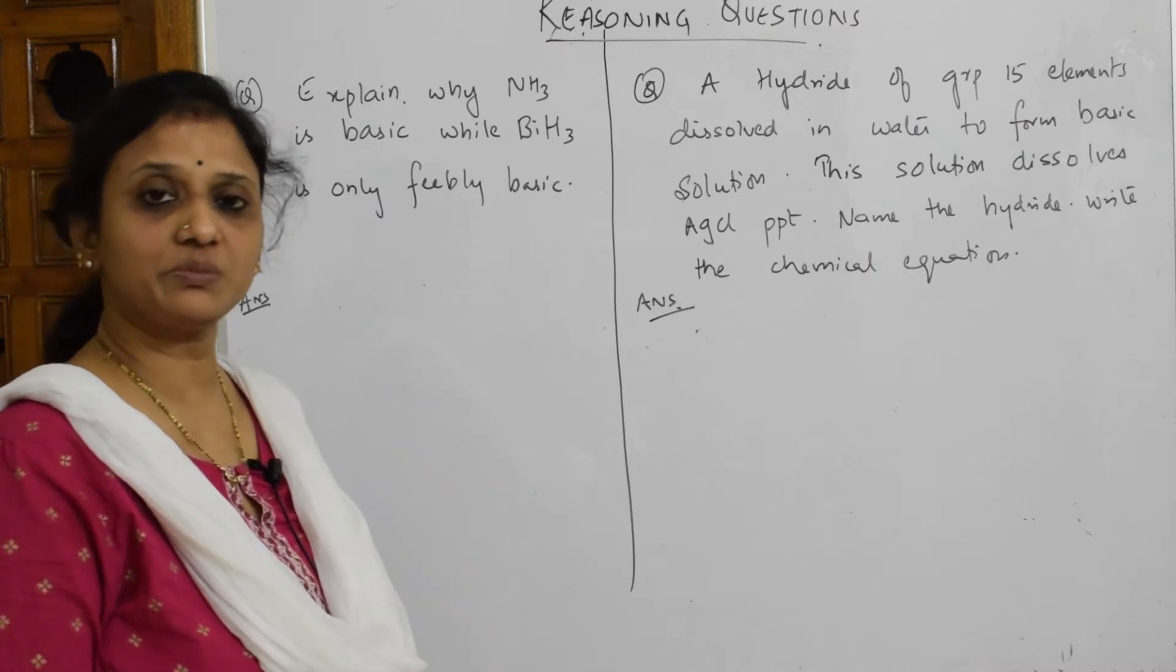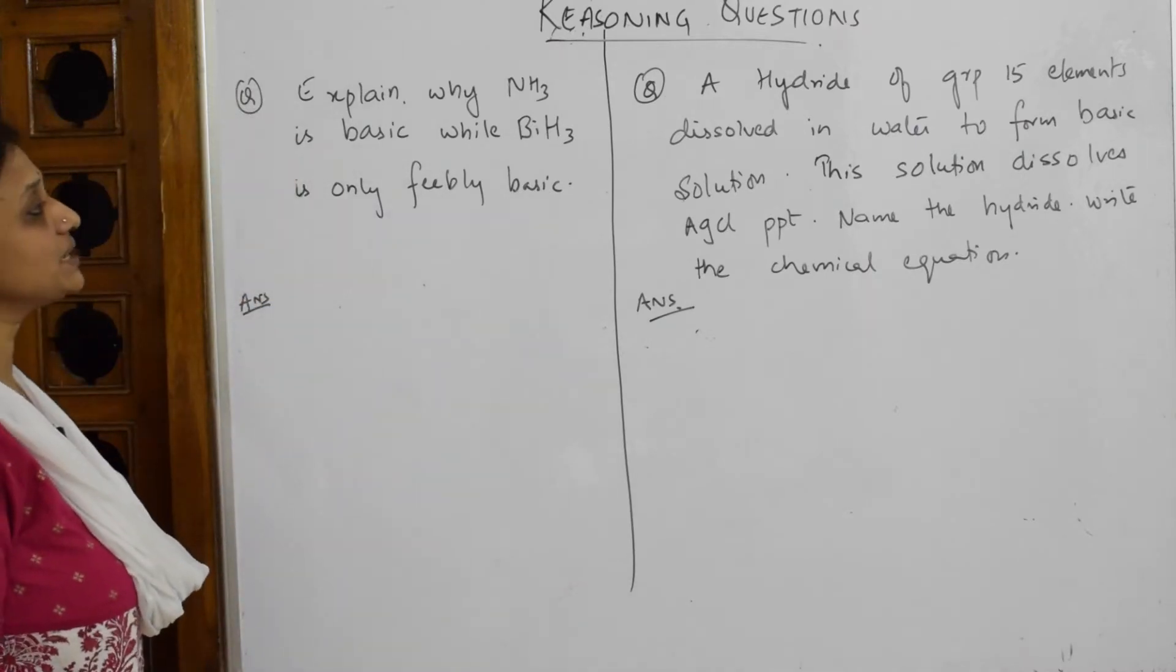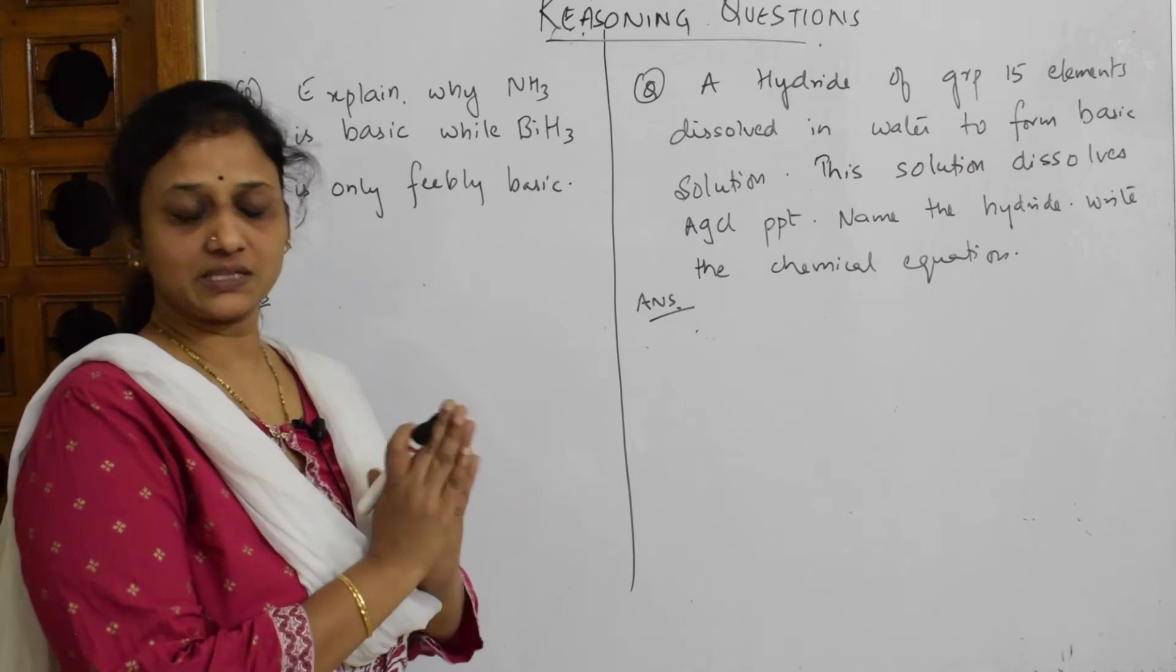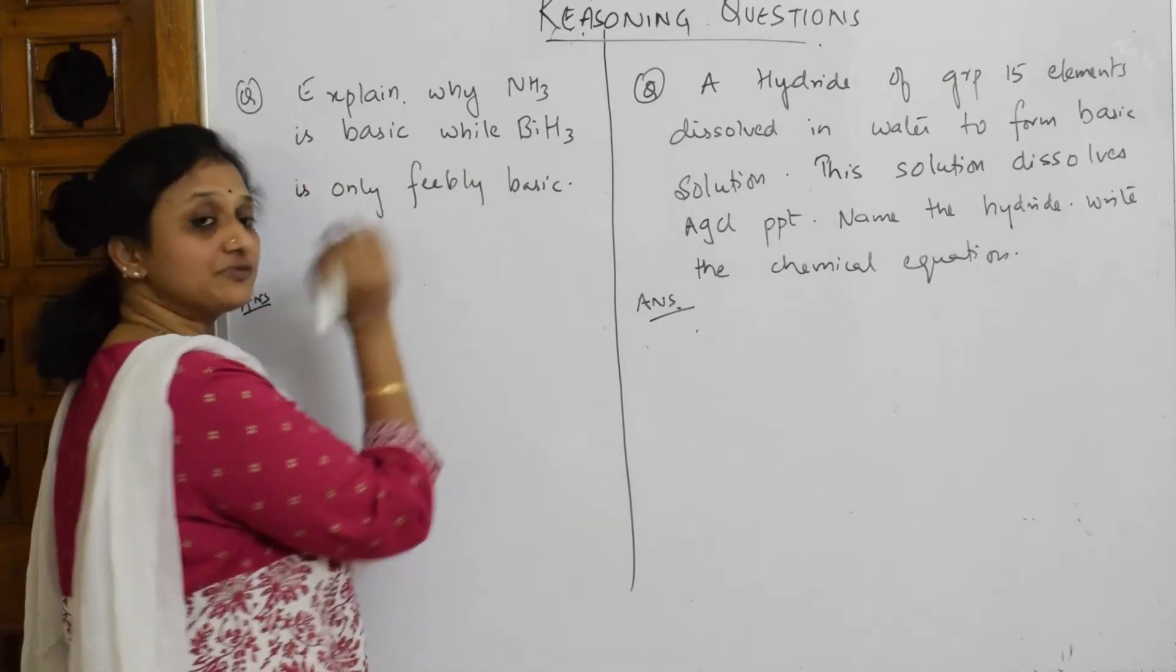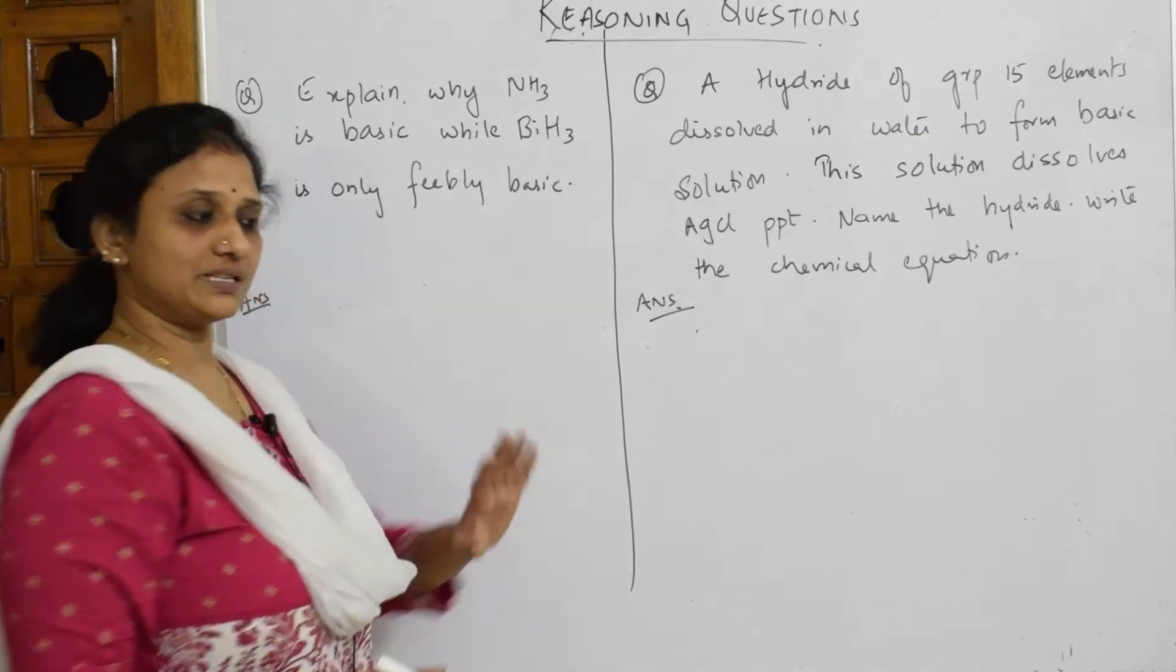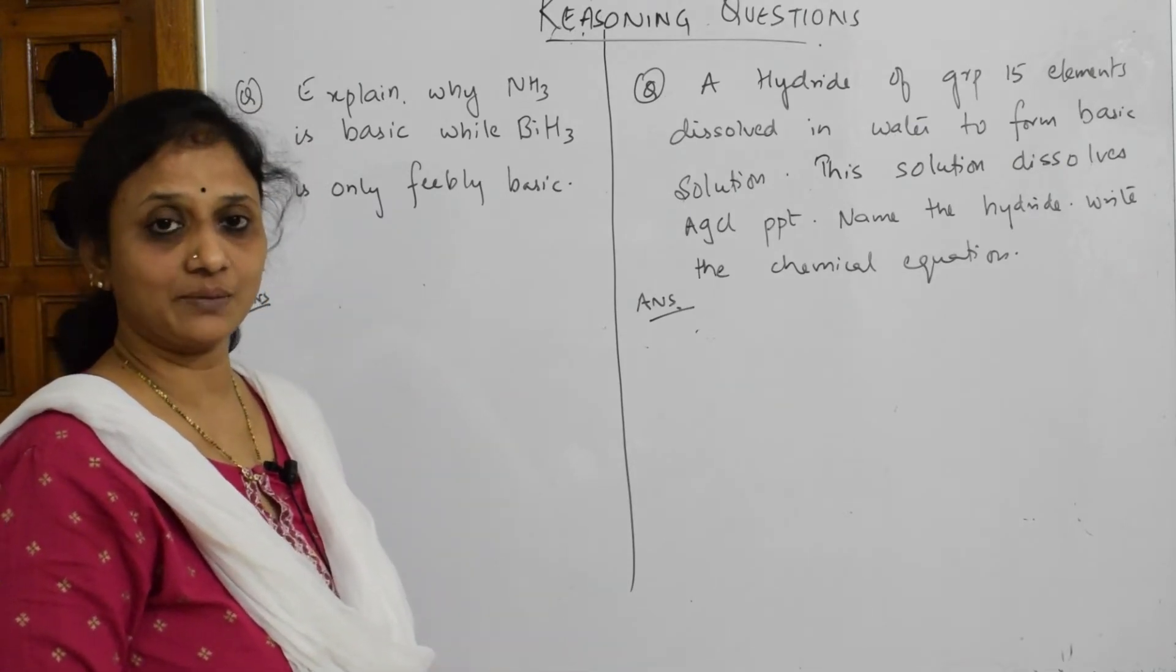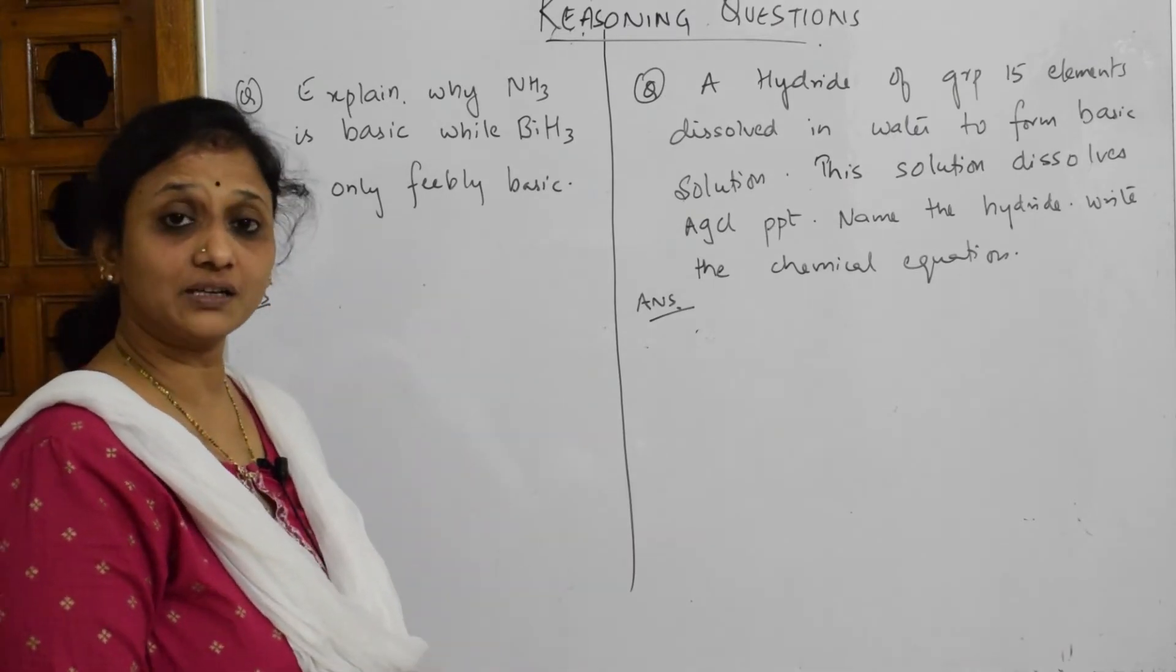This type of question may be given in the exam. First question: explain why ammonia is basic while BiH3 is only feebly basic. They said ammonia is basic. When I go down the group, the hydride form is feebly basic. Explain the reason. In your board, there will be basically only four important sentences which you should remember and write in the exam. When you explain basicity, don't write different paragraphs which are irrelevant to the answer.